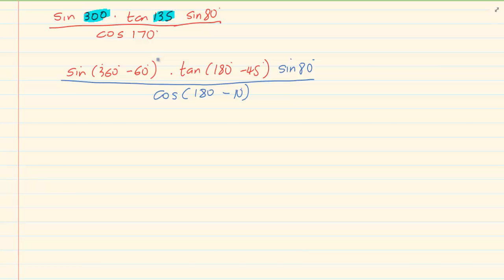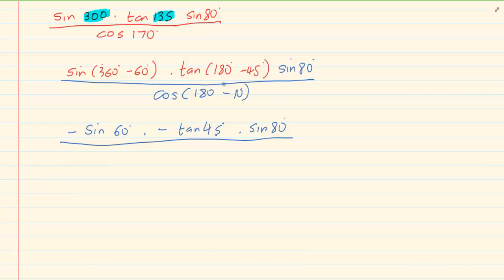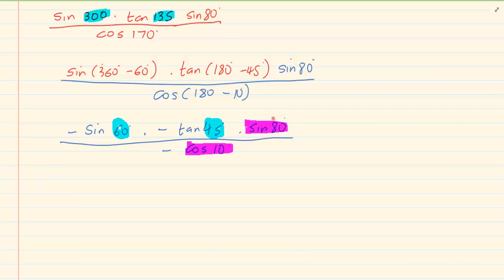Sin in the fourth quadrant is negative. Then I put the ratio sin and the angle 60 degrees. Tan in the second quadrant is negative — tan 45. I didn't fiddle with my sin 80. Cos in the second quadrant is negative — cos 10 degrees. Now sin 60 is a special angle, tan 45 is a special angle. But sin 80 and cos 10 — neither one of them are special angles. When you have a sin and a cos linked in the sense that the 80 and the 10 actually add up to 90 degrees, then you choose to change one of them by using the 90. So basically we are stuck — we can't use special angles, we can't cancel them, so we use the 90.